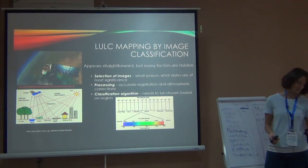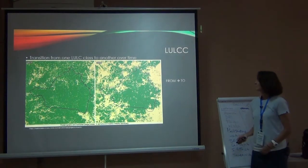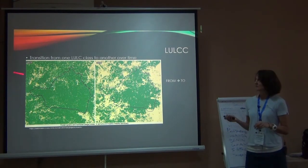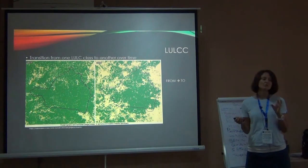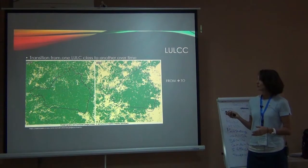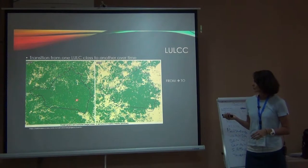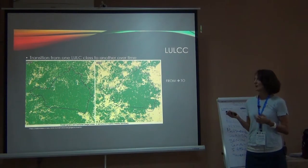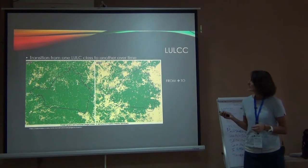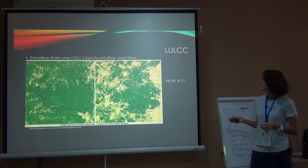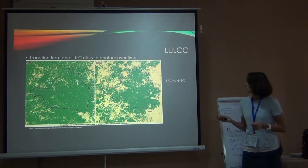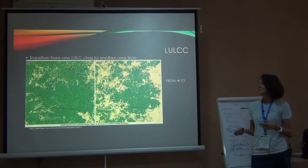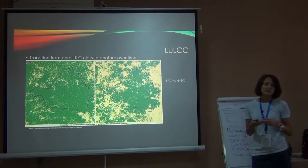But today we want to talk about land use land cover change. All land use land cover change means you're transitioning from one land use land cover class to another over time. Here's an example: the green pixels are forest and the beige pixels are anything else. From 1974 to 2000 you see quite a bit of deforestation in this area — you're interested in quantifying that change.